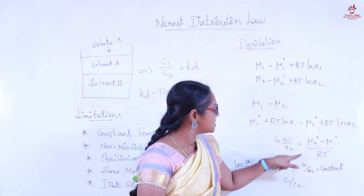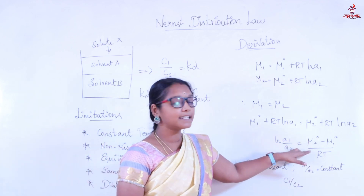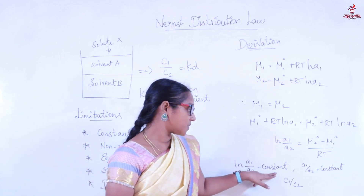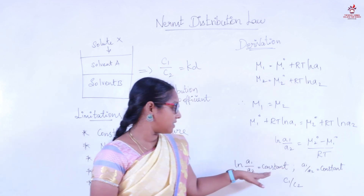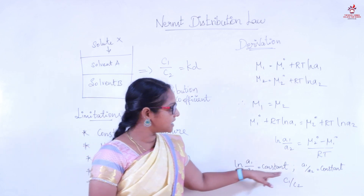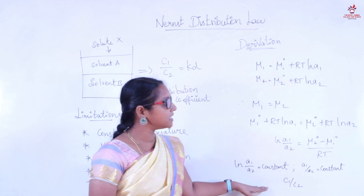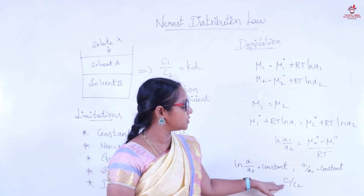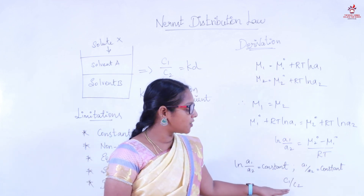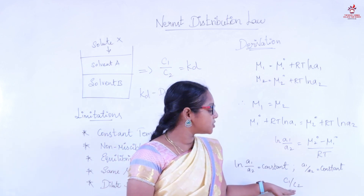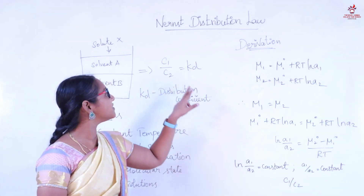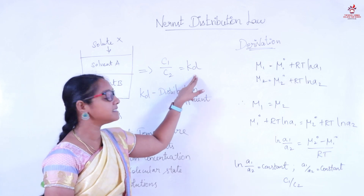Finally, since the standard chemical potentials are constant, ln(A1/A2) equals a constant, which gives A1/A2 equals a constant. Since activity is equal to concentration for dilute solutions, A1/A2 = C1/C2. Therefore, the derivation of the Nernst Distribution Law gives us C1/C2 = KD, the distribution coefficient.